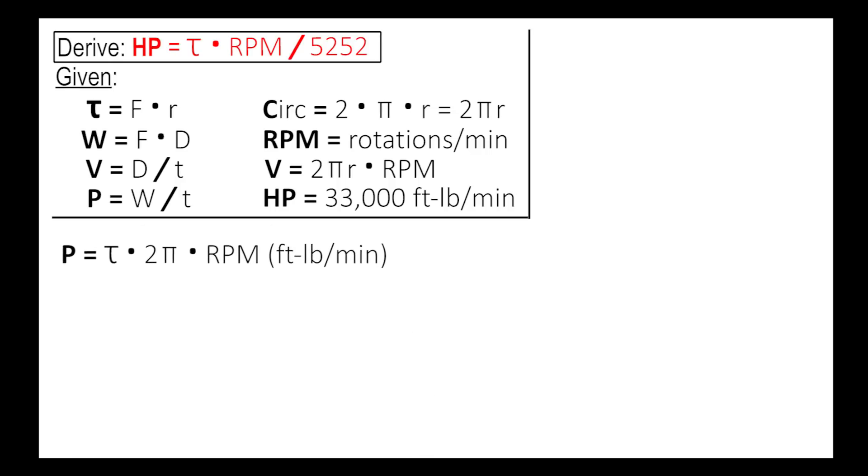Remember I said in the beginning that horsepower is nothing more than a conversion. It's just 33,000 foot-pounds per minute. It's a lot like meters to kilometers. So if you had 4,000 meters, you divide by 1,000 to get 4 kilometers. We're going to do the same sort of thing here. So our power equation there, and we're doing a little dimensional analysis here.